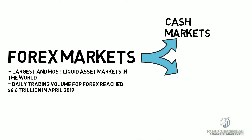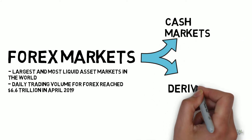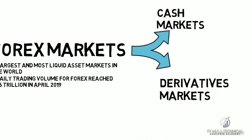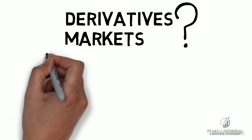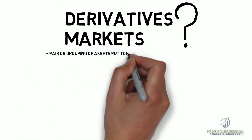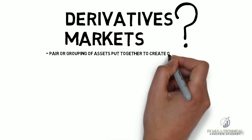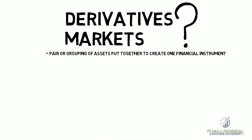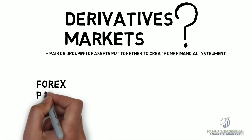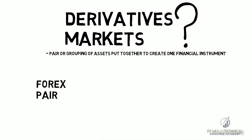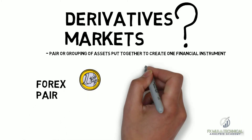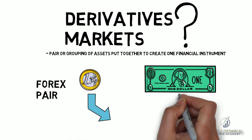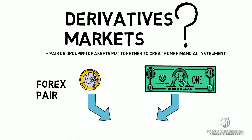Forex markets exist as cash markets, as well as derivative markets. What are derivative markets? Derivatives is a pair or grouping of assets put together to create one financial instrument. So Forex pairs are considered a derivative, made of currency pairs together to create one asset that can be traded.